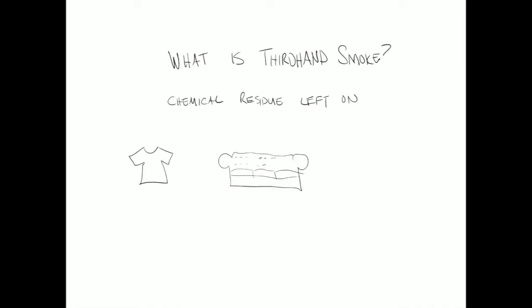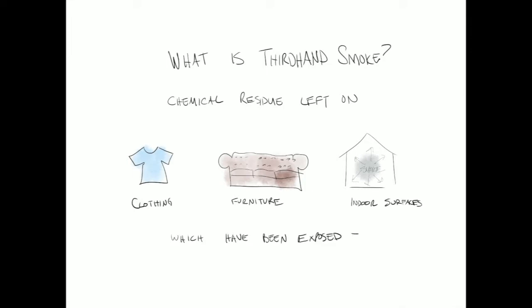So what is third-hand smoke? Third-hand smoke is the chemical residue left behind on clothing, furniture, or other indoor surfaces that have been exposed to tobacco smoke. This residue is persistent and provides a way in which tobacco smoke can continue to expose people long after smoking has occurred, and even in non-smoking indoor environments.